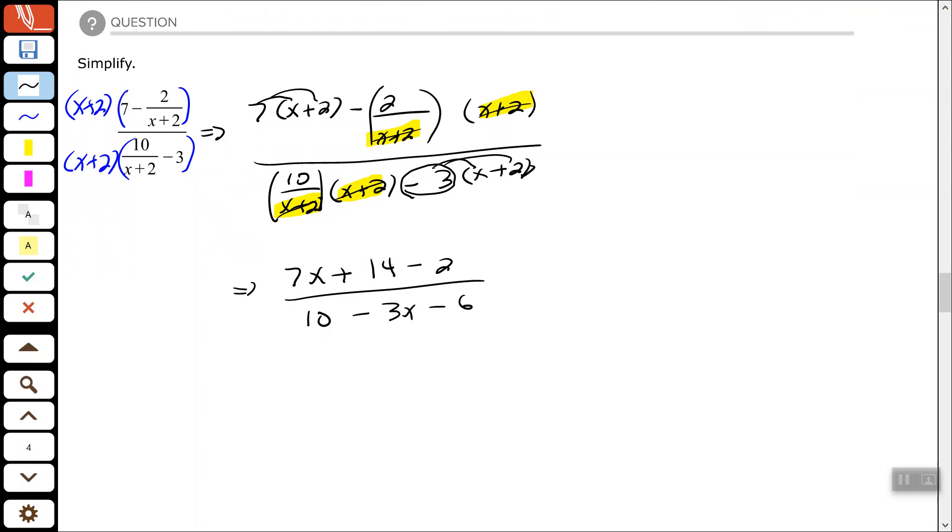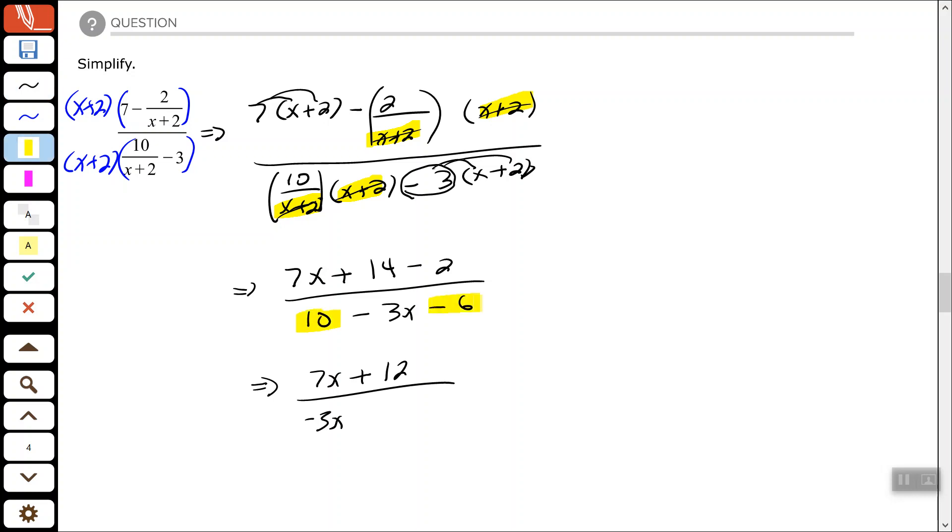All righty, let's clean this up a little bit. Let's get these like terms combined. So in the numerator, I have 14 minus 2 that can be combined to make 12, positive 12. And then in my denominator, I have the negative 3x, but I have the 10, positive 10, minus 6 that can be combined, and 10 minus 6 is positive 4, so plus 4. I cannot factor anything. There's nothing that can be simplified. This is my final answer.